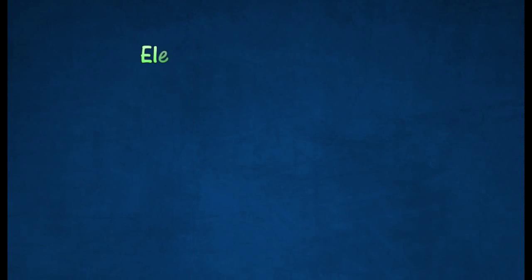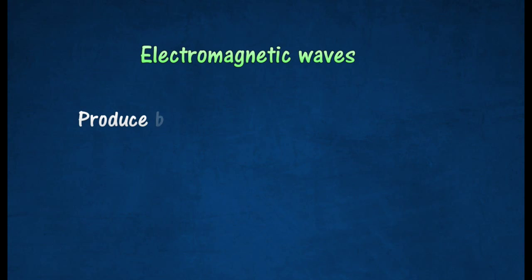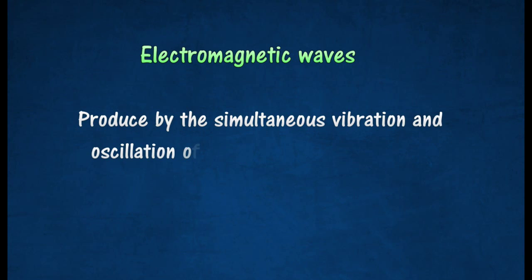Electromagnetic waves are waves that consist of vibrating electric and magnetic fields. The direction of propagation of the wave is perpendicular to both fields.